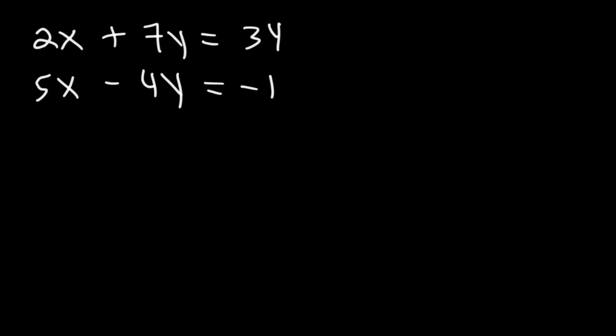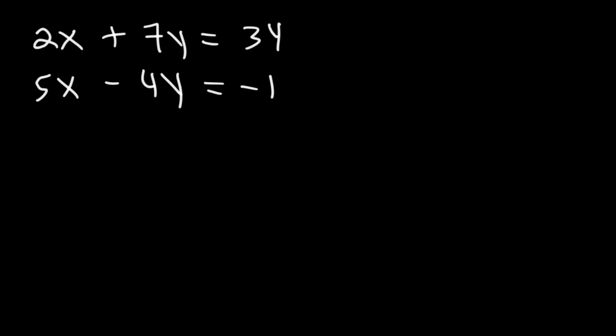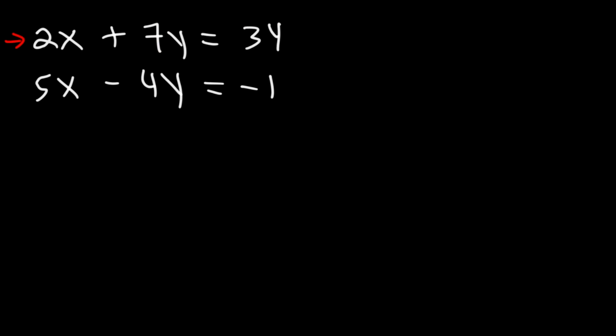However, the first equation is better than the second. Using the second equation and dividing by 5 gives two fractions: 4 over 5 and 1 over 5. But using the first equation and isolating x means dividing 7 by 2 gives a fraction, while dividing 34 by 2 gives the whole number 17. So we only deal with one fraction. Let's isolate x in the first equation.